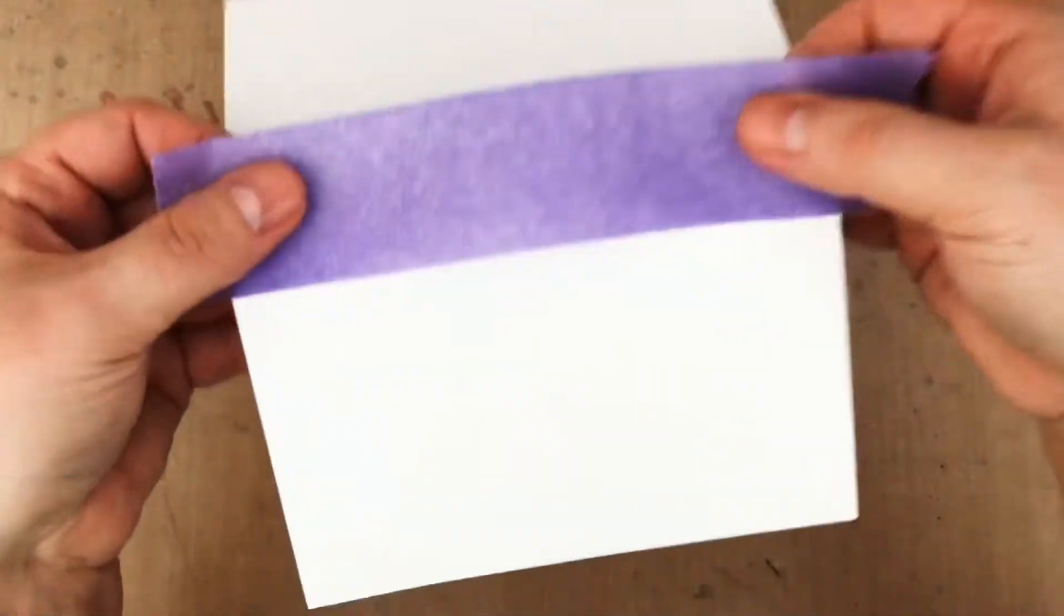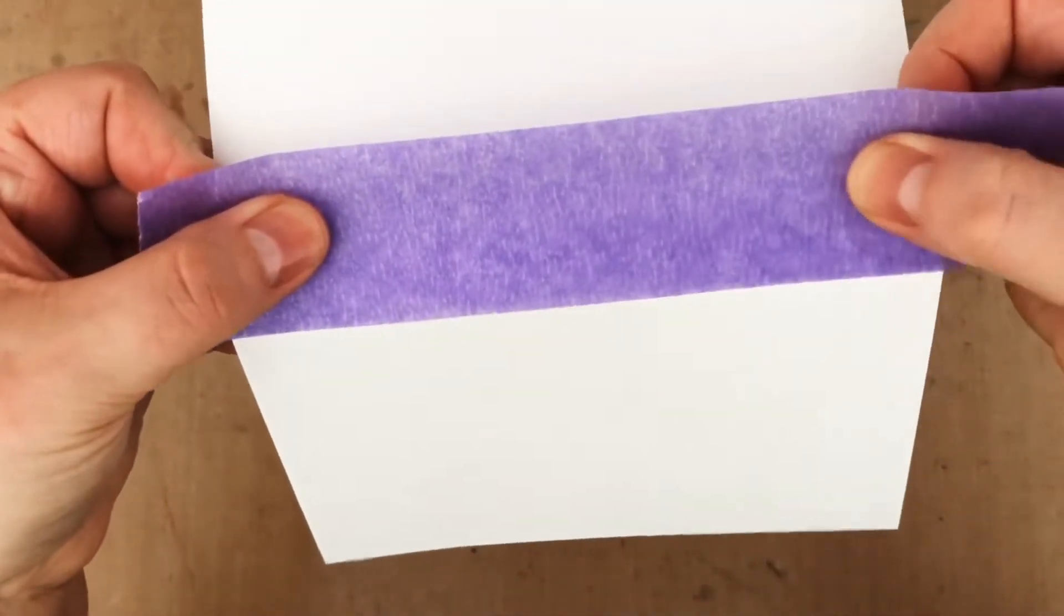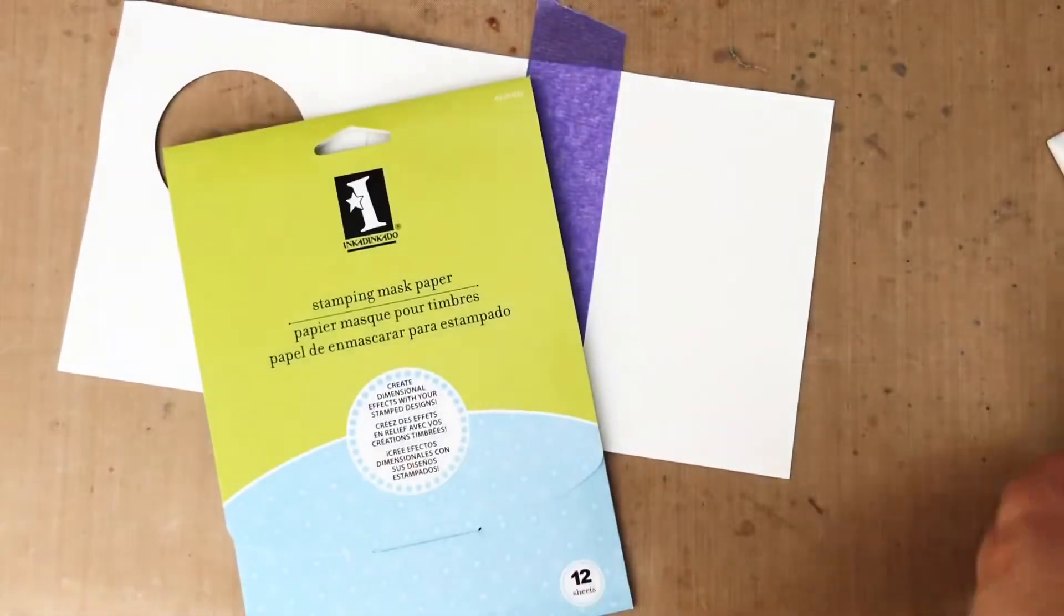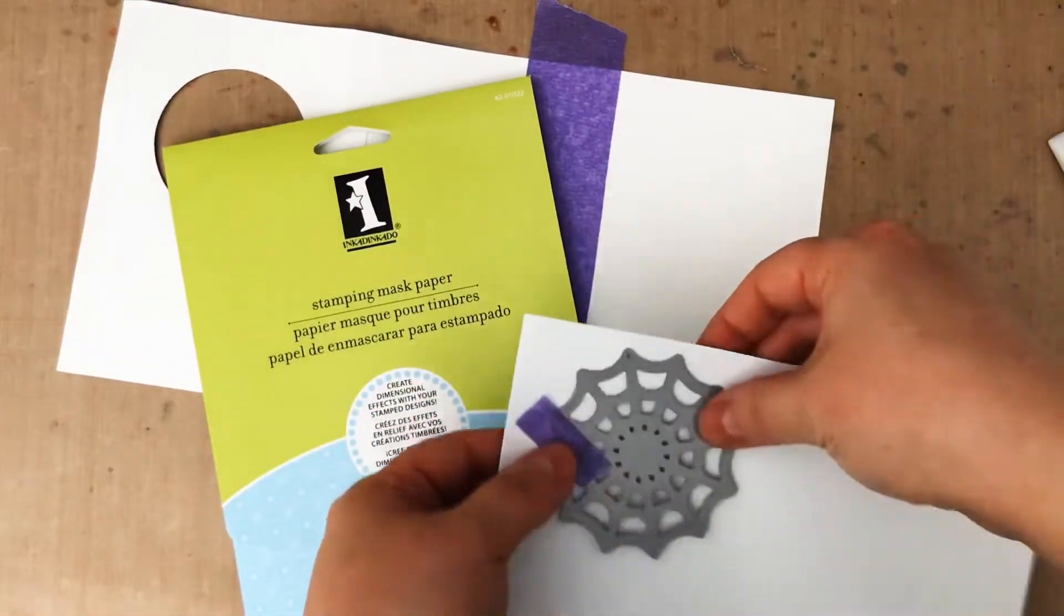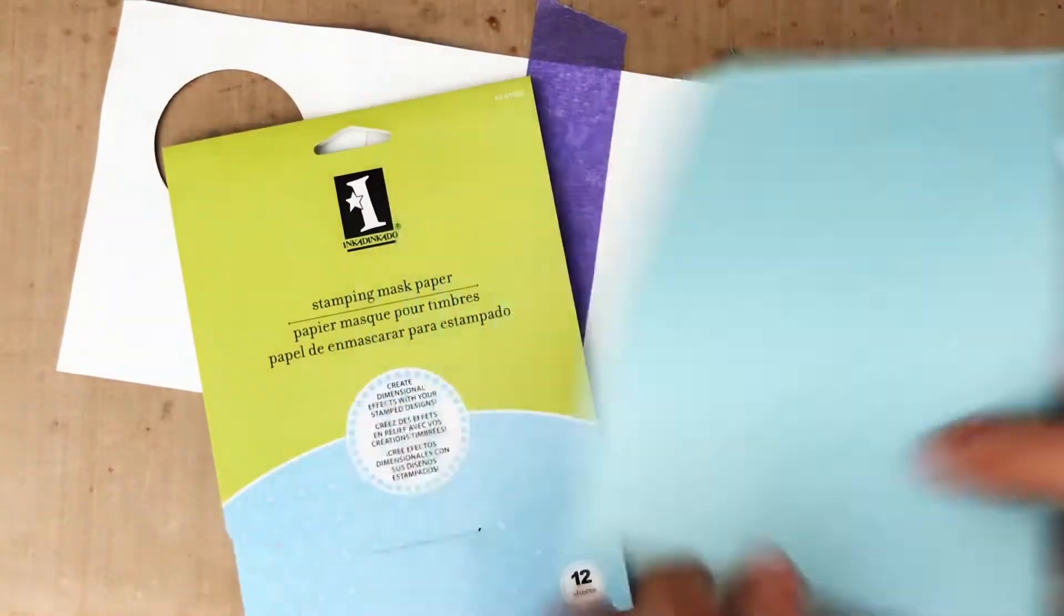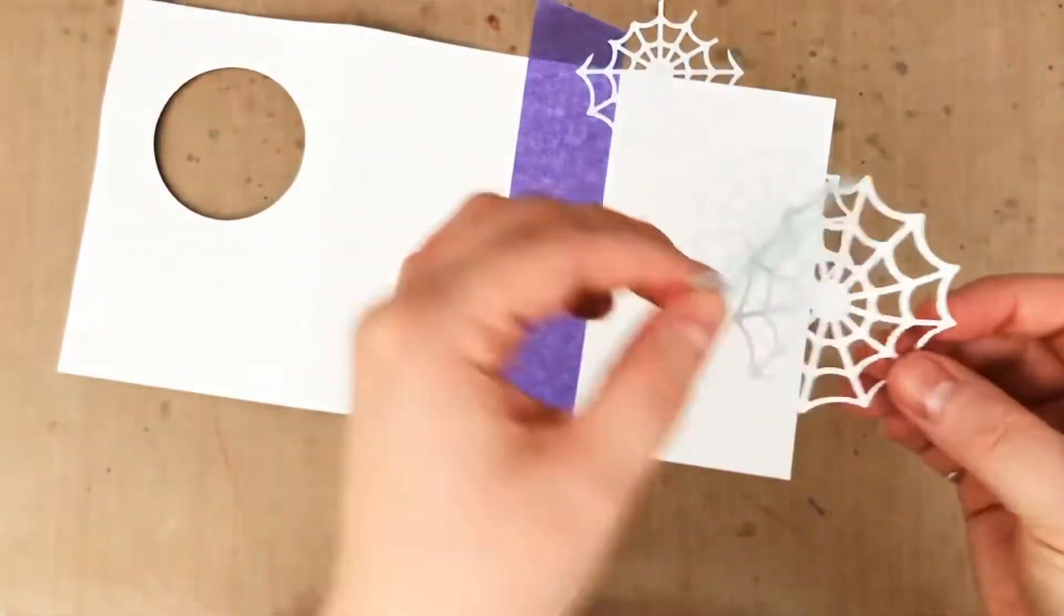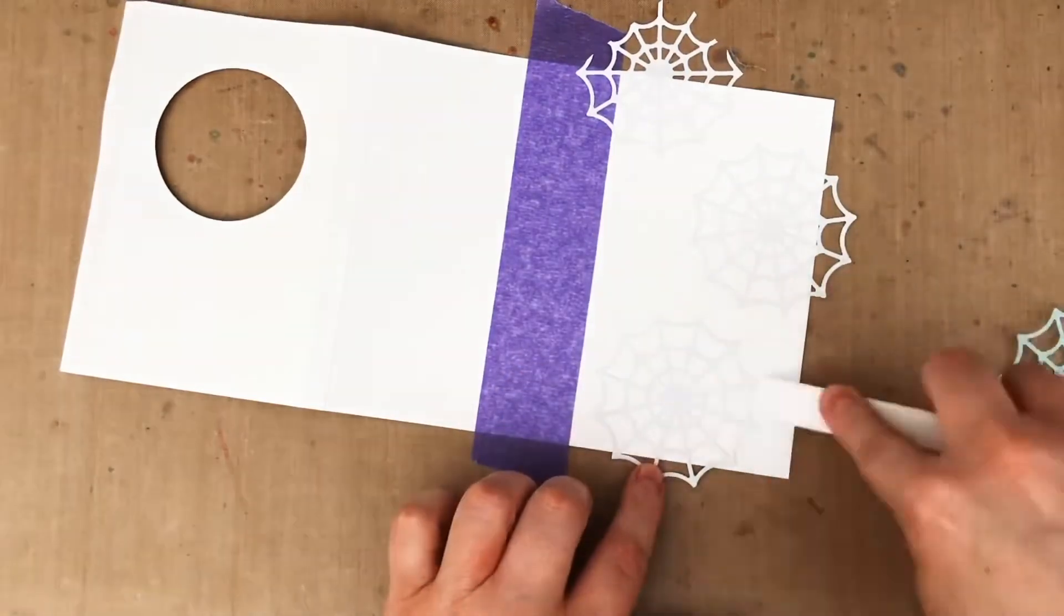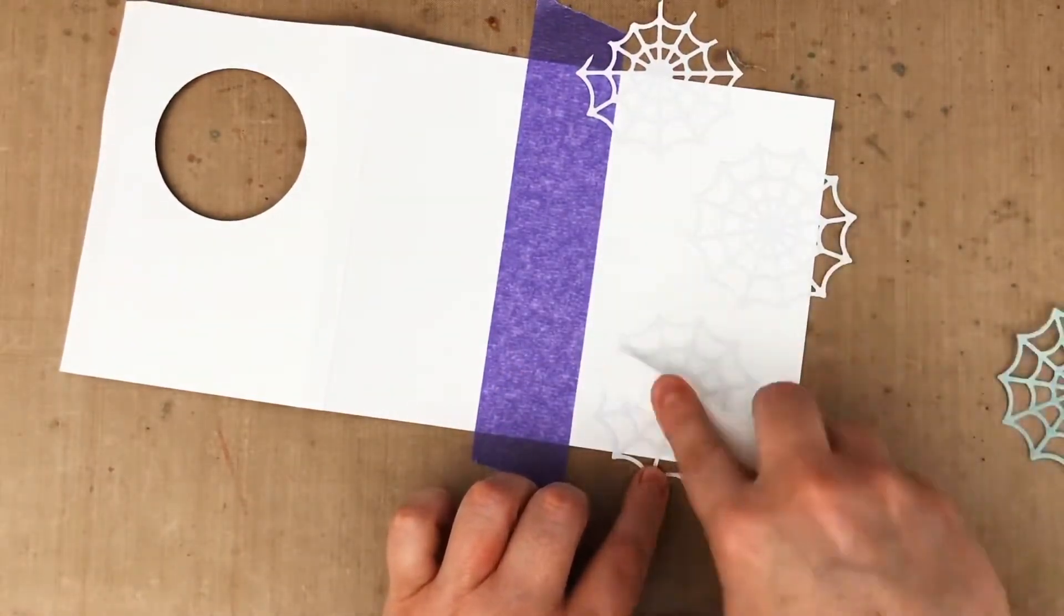I want to decorate the front of my card, so I'm using a piece of wide purple tape right against the fold to mask off the front. Then I'm going to take the Essentials by Ellen little spiderweb dies and some stamping mask paper and die cut some masks to use. I'm putting those on my card front, and they're really intricate so I'm going to burnish them with my bone folder again just to make sure they're good and stuck down before I add some ink blending with some blending brushes.